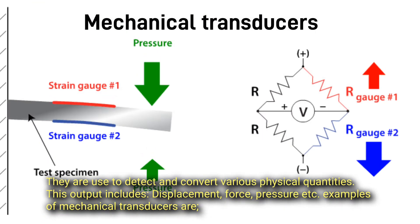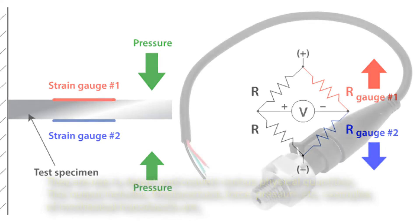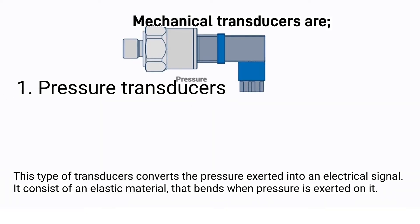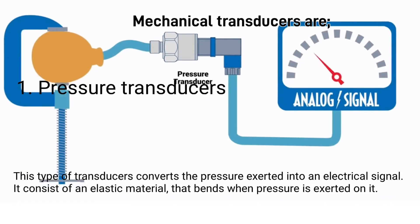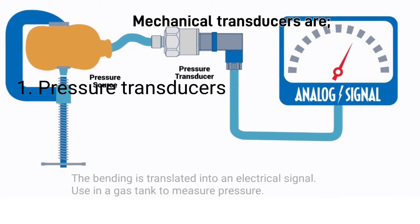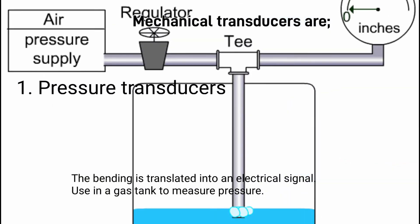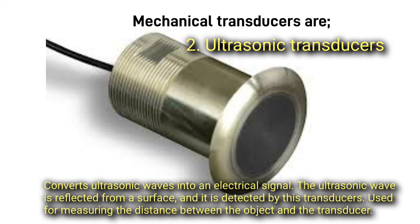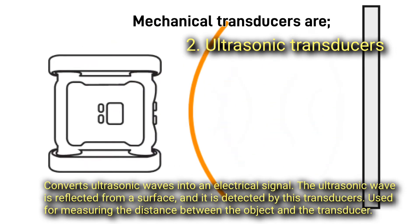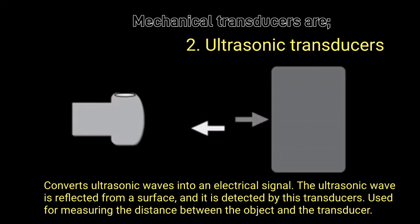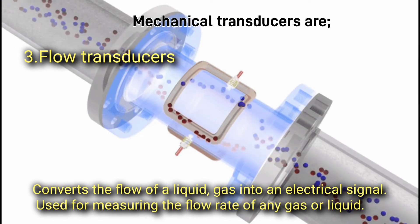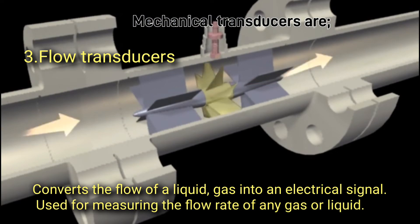Mechanical transducers are used to detect and convert various physical quantities, with outputs including displacement, force, and pressure. Examples include: one, pressure transducers — converts the pressure exerted into an electrical signal using an elastic material that bends when pressure is applied, used in gas tanks to measure pressure; two, ultrasonic transducers — converts ultrasonic waves into an electrical signal, used for measuring distance; three, flow transducers — converts the flow of a liquid or gas into an electrical signal, used for measuring flow rate.